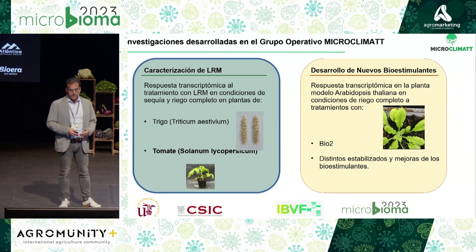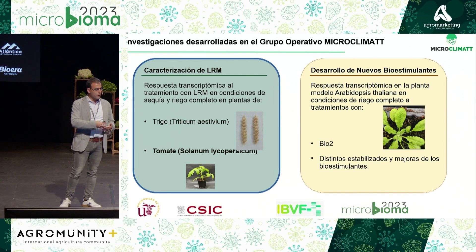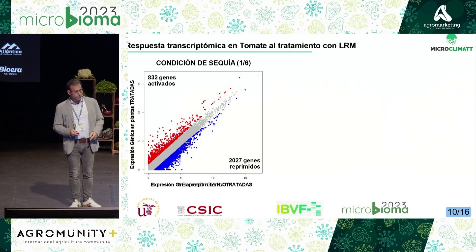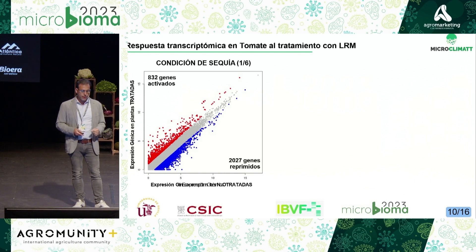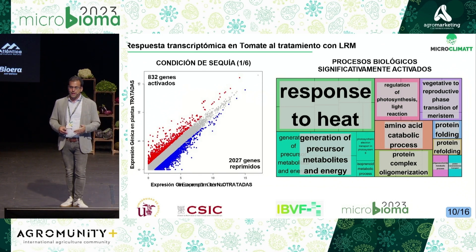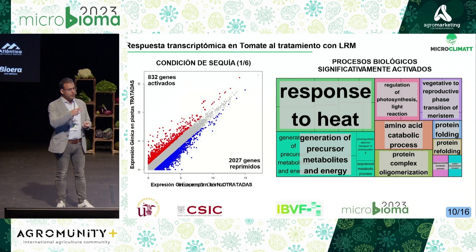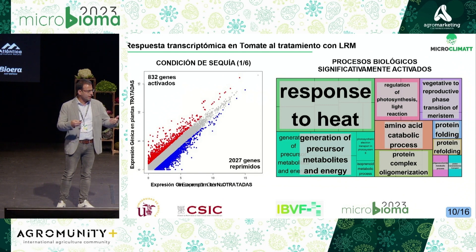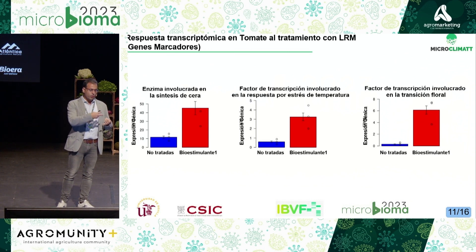So we wanted to see if this biostimulant had this effect only in one crop, or if it had a broader effect on different plant species. Tomato is quite different from wheat, so it was the next one we tested. Similarly, we conducted our transcriptomic study, applied the LRM again in plants subjected to drought, and again we saw that there was differential expression of thousands of genes. These genes were not randomly distributed among plant processes, but were mainly focused on responses to heat and developmental processes. The activated genes were slightly different from those seen in wheat, but that's because these are different plants with different strategies to cope with drought. While wheat closes stomata, tomato induces genes involved in wax synthesis on the cuticle to prevent water loss and accelerate flowering.